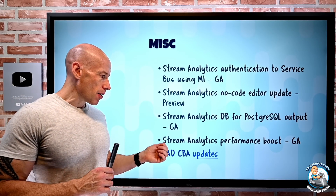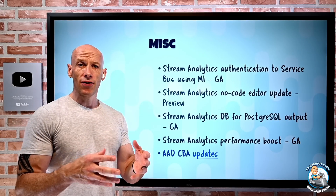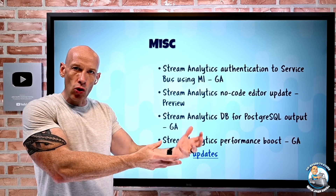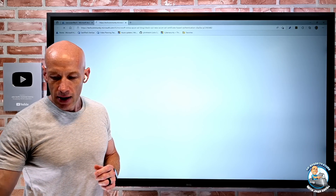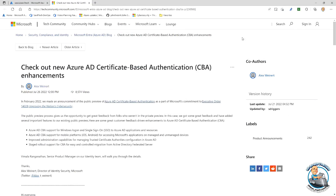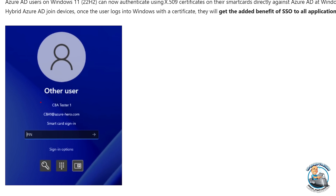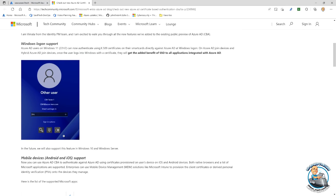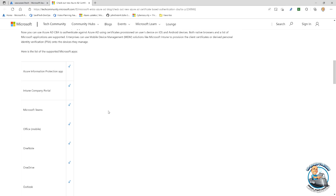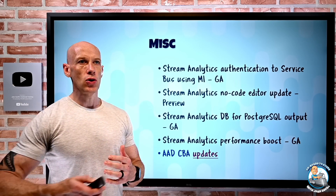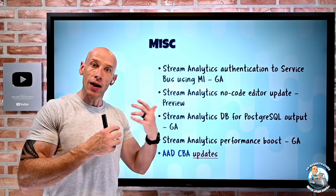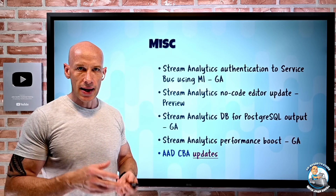Finally, Azure Active Directory certificate-based authentication has a number of updates. This is a powerful native capability — I don't have to hook into third-party solutions and can use smart card keys. For the latest version of Windows 11 22H2, I can now authenticate directly at the logon screen using certificate-based authentication and get full SSO. A number of iOS and Android apps can also now use certificate-based authentication, and they've improved the admin experience as well. More and more companies — including under government directives — want to use CBA, and now I can do that directly with Azure AD without hooking into something else.